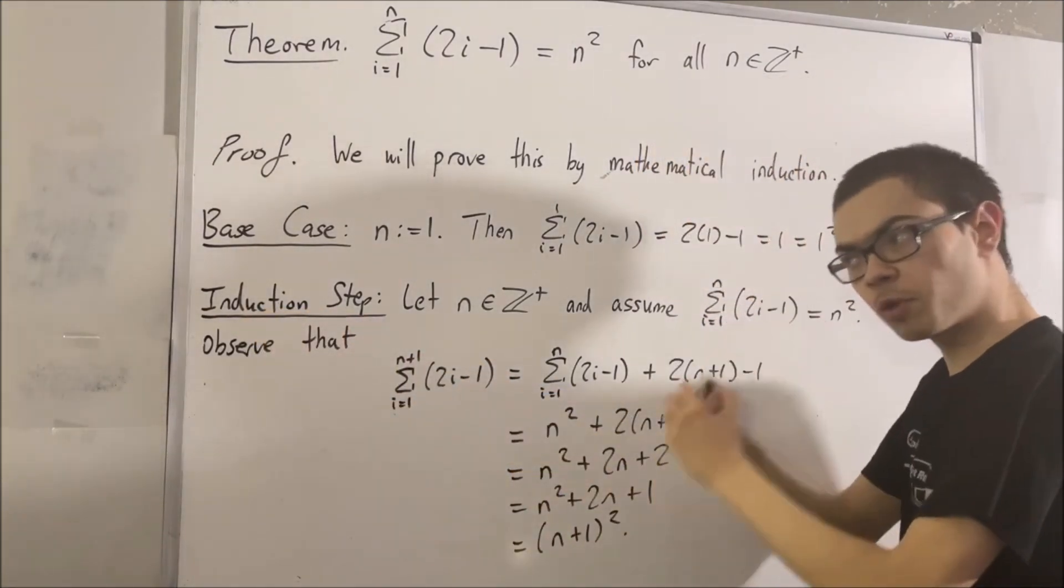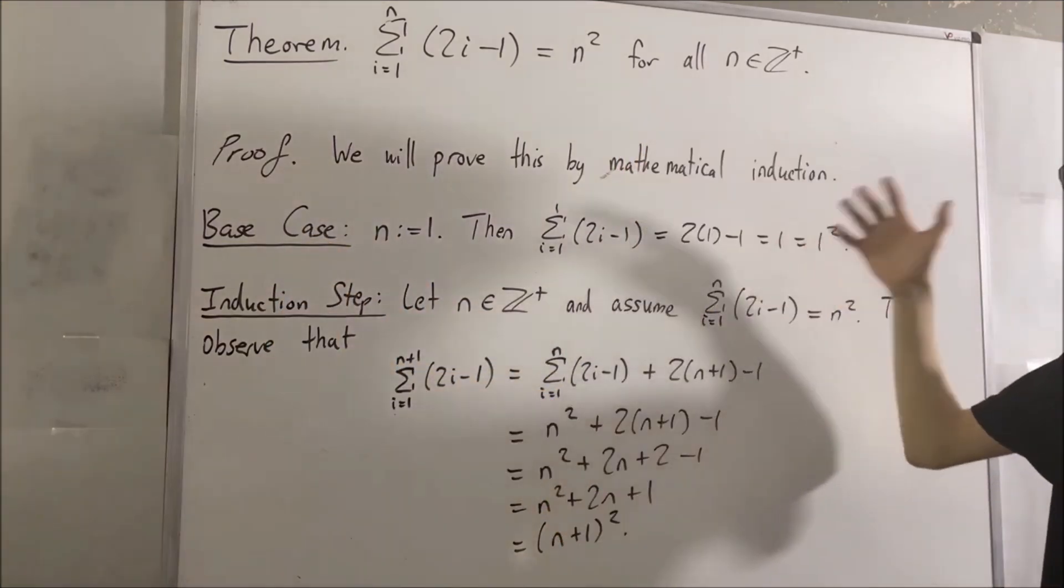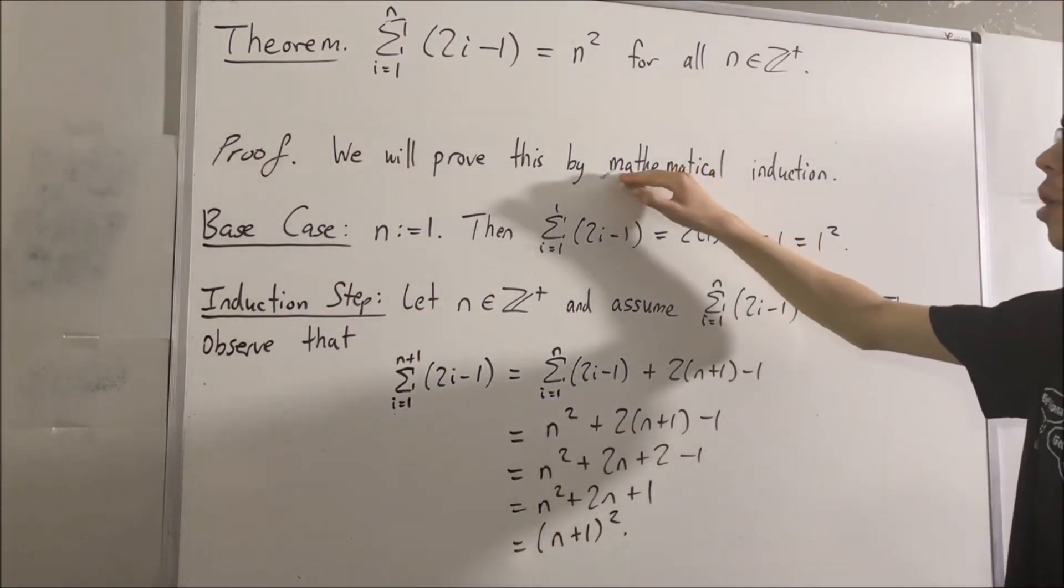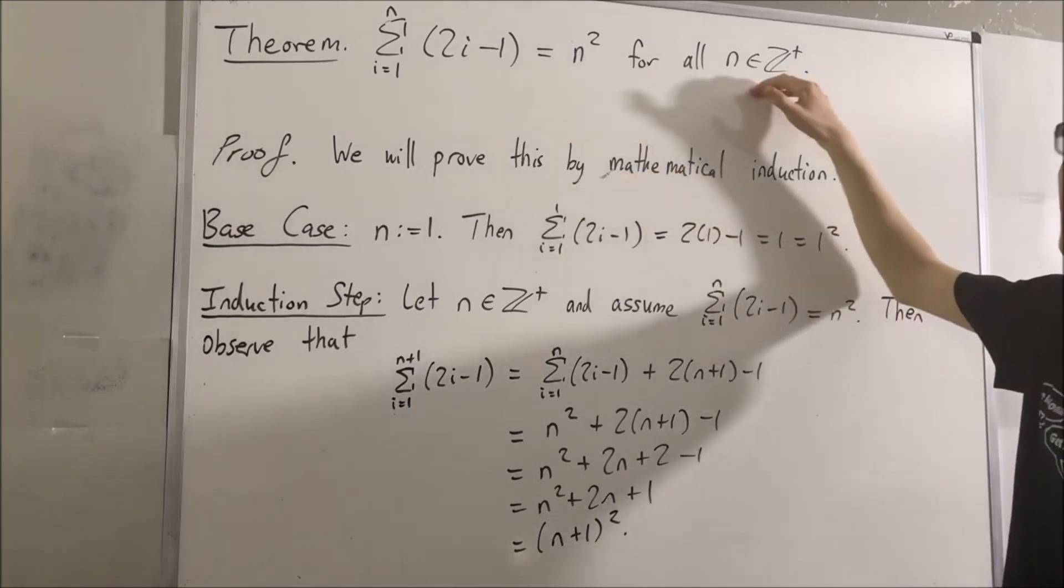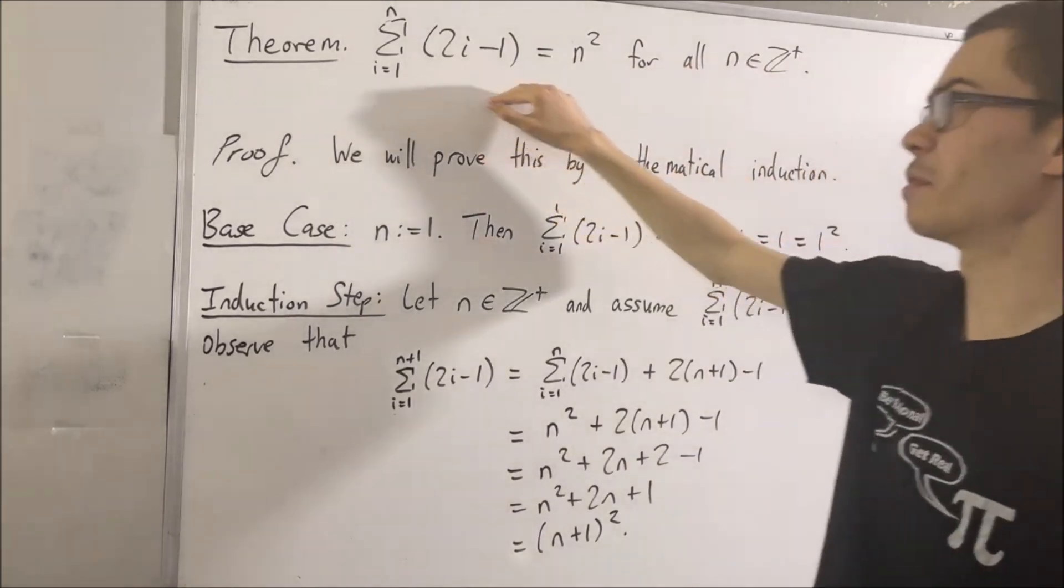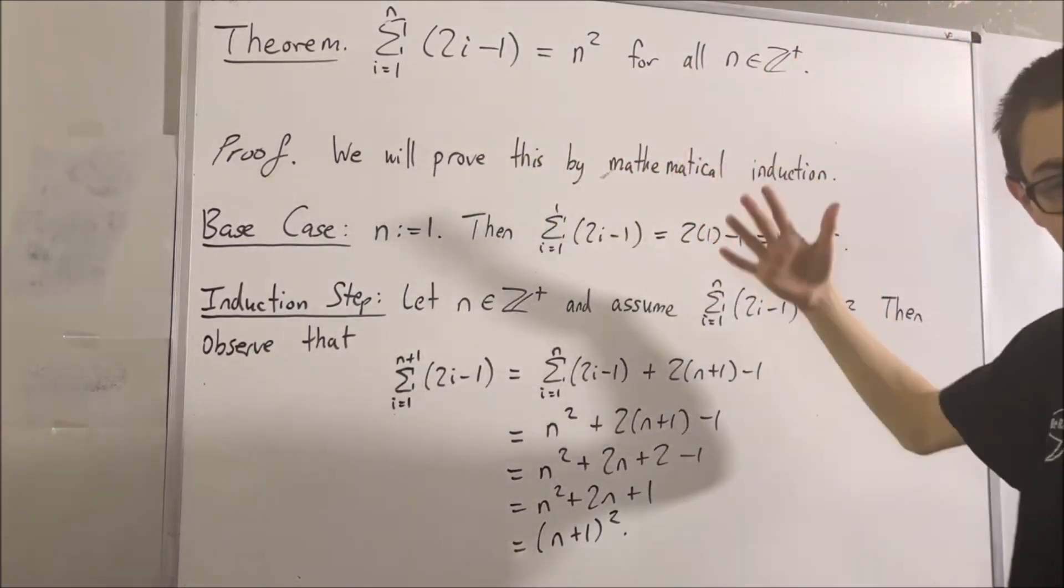And because we've proven the base case, and we've proven the induction step, what that means is we've done all the requirements for mathematical induction. We have now shown for all positive integers n that this statement must be true. So, this completes the proof.